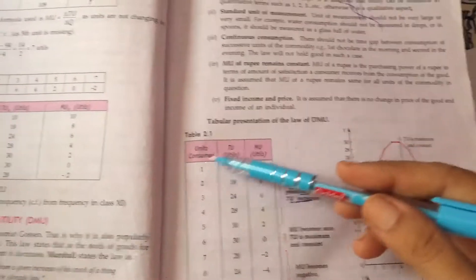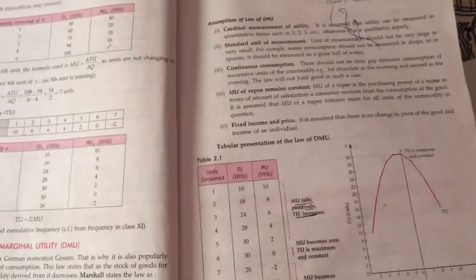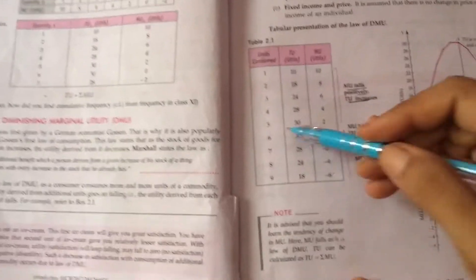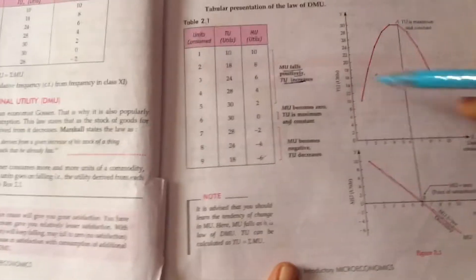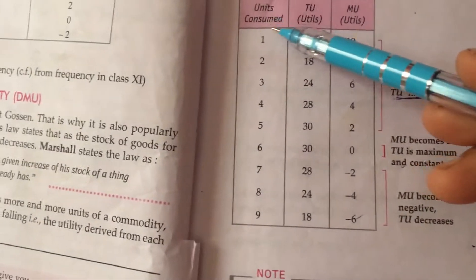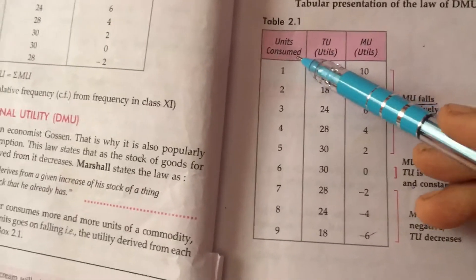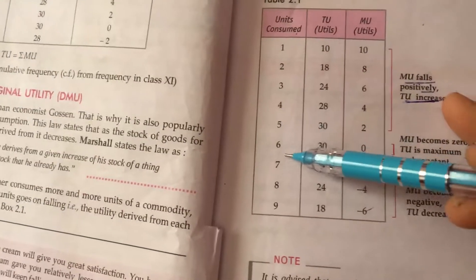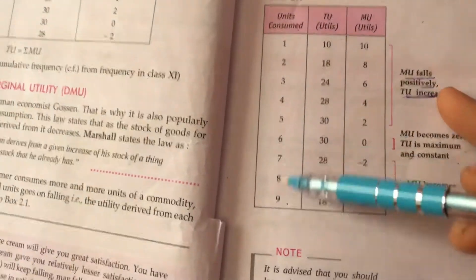Now this is a table. Children, this table is very important. You have to draw this table in your notebook. Because on the basis of this table, you are showing these two relations and these three phases. This is a table. First, it is the units consumed. How many units are consumed? One, two, three, four, five, six, seven, eight, nine units are consumed.